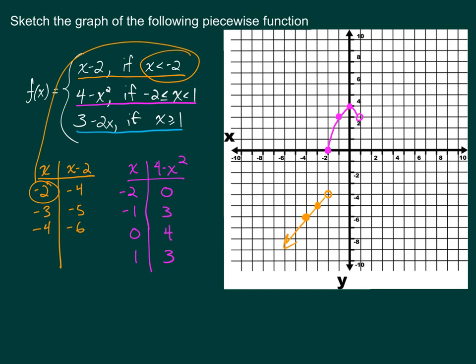Finally, I set up one last table for x and 3 minus 2x. This function only exists when x is greater than or equal to 1, so I start at 1 and pick a couple more values. Substituting these x-values in and plotting the points gives the ordered pairs shown, plotted in blue on the graph. We didn't have to worry about any open dots with this last piece because it says greater than or equal to 1.